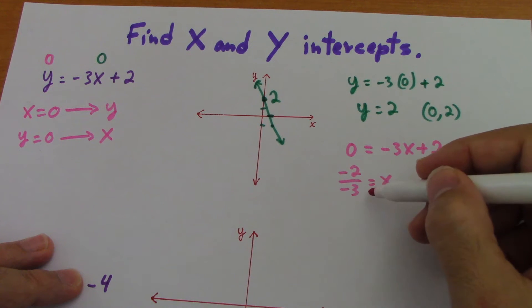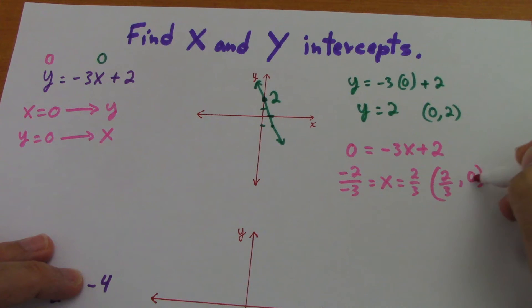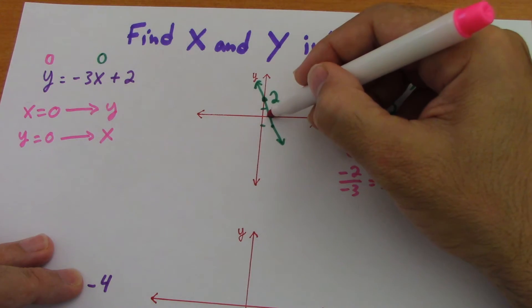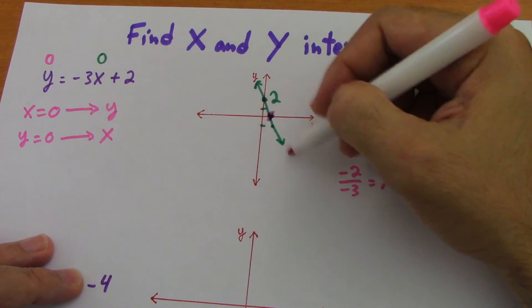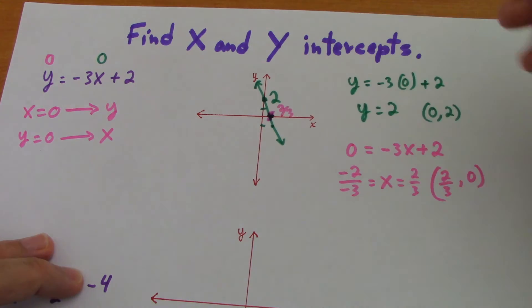And minus divided by minus is plus, so the x will equal 2 over 3. So the point would be 2 over 3 comma 0. We gave 0 to y to find the x intercept. So this point here, where the line crossed the x axis, is in 2 thirds.